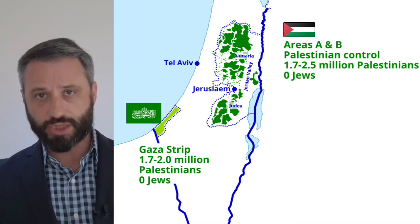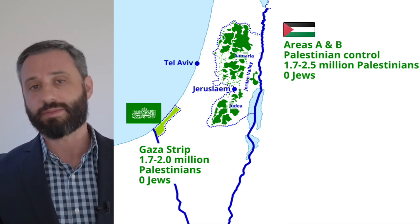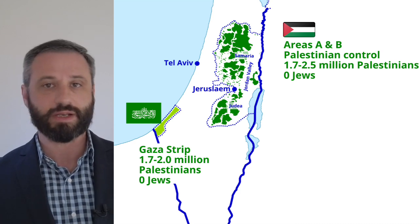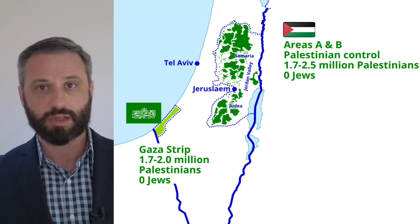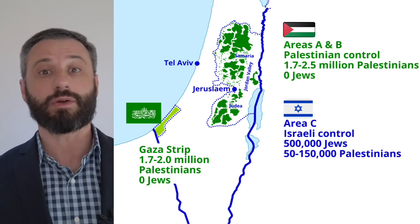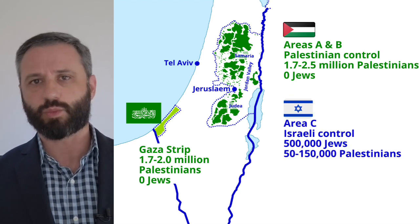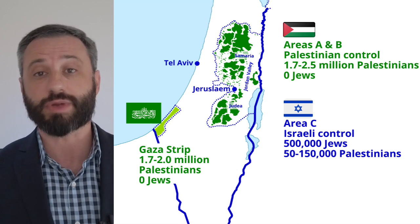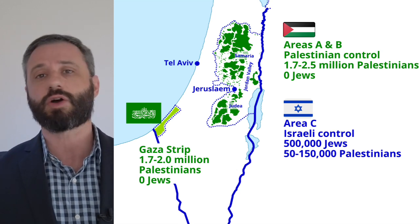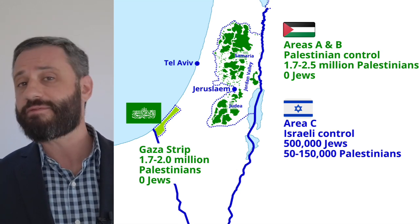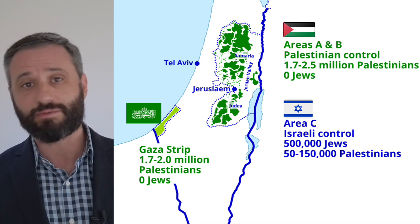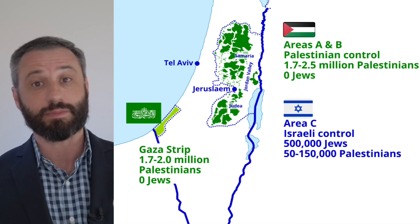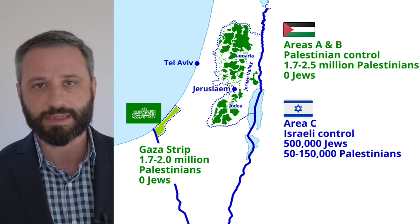Other Palestinian residents live in the West Bank, which is divided by the Oslo Accords into Areas A, B, and C. Areas A and B, shown here in green, are controlled by the Palestinian Authority, with 1.7 to 2.5 million Arabs and zero Jews living there. Area C — the wide area surrounding the green areas — is under Israeli control, as agreed in the Oslo Accords. There are about half a million Israeli Jews and 50 to 150 thousand Arabs holding Palestinian passports living in Area C.